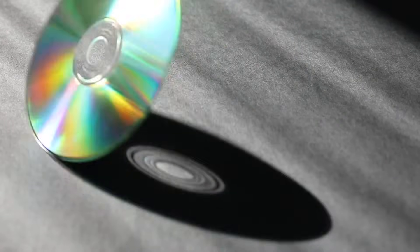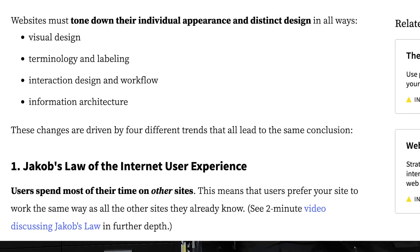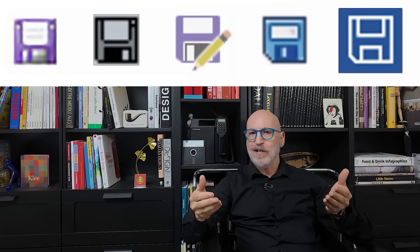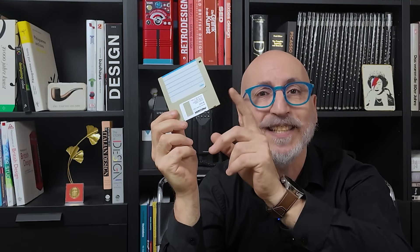By the late 90s, CD-ROMs and later USB sticks replaced floppies as storage, but the icon stayed in software. That's interface inertia. Jacob Nielsen's famous law of UX explains it: people spend most of their time using other systems, so they expect yours to work the same way. As every program used the floppy disk for save, changing it would confuse millions of users. So the icon stayed.